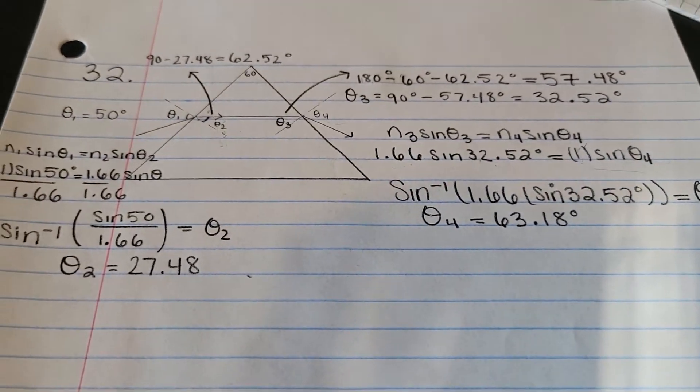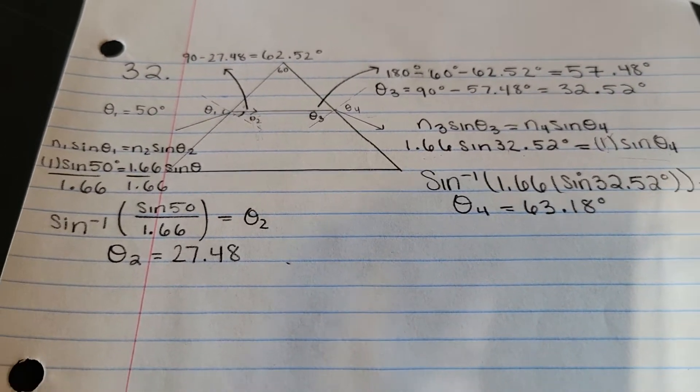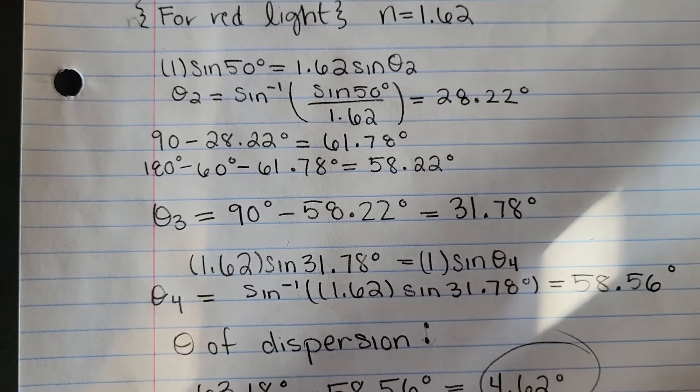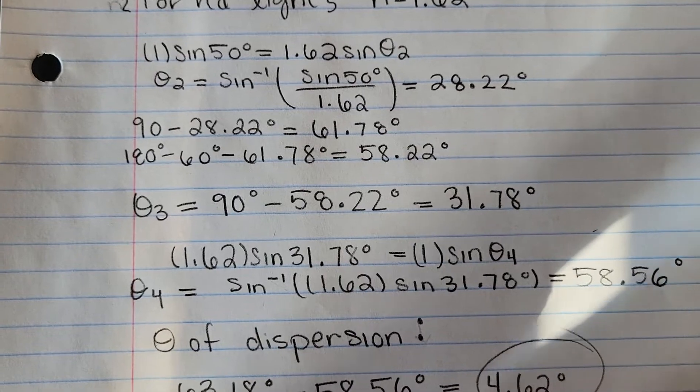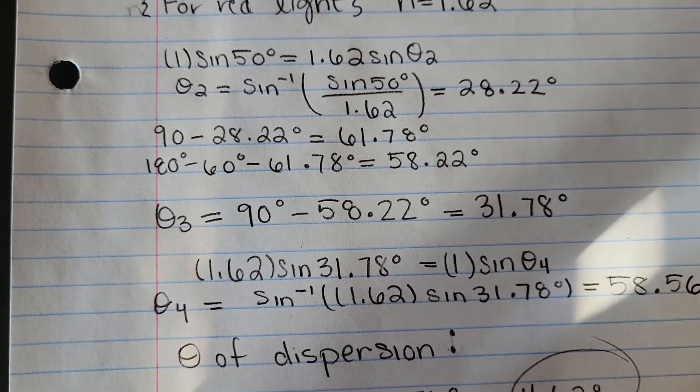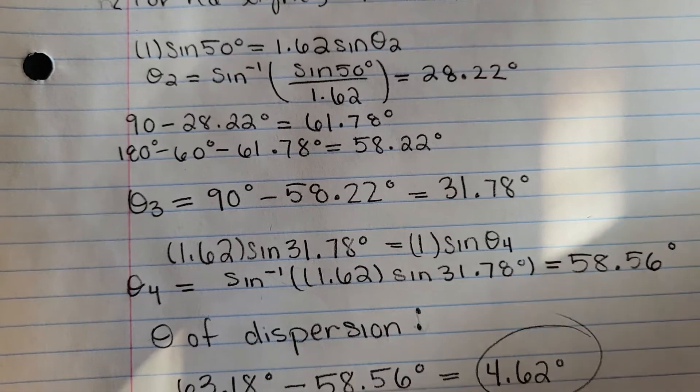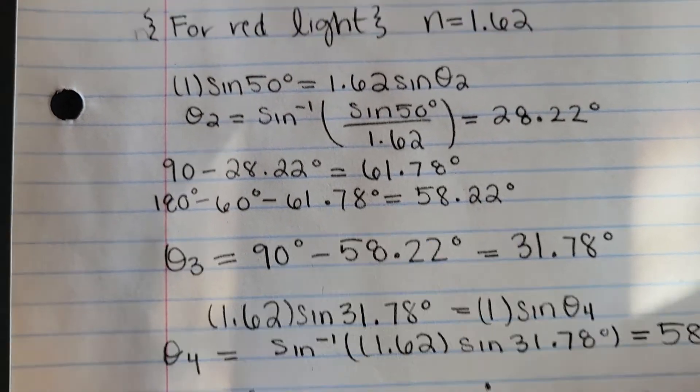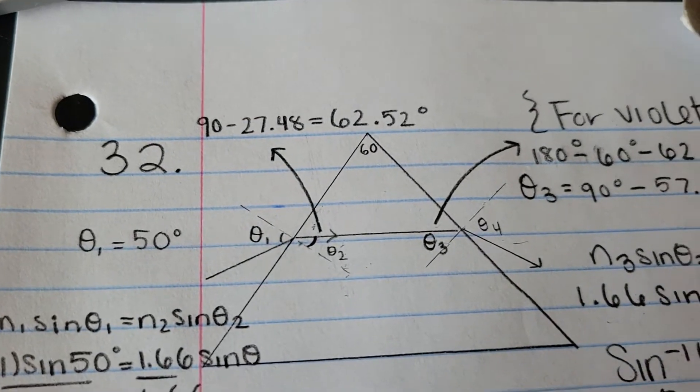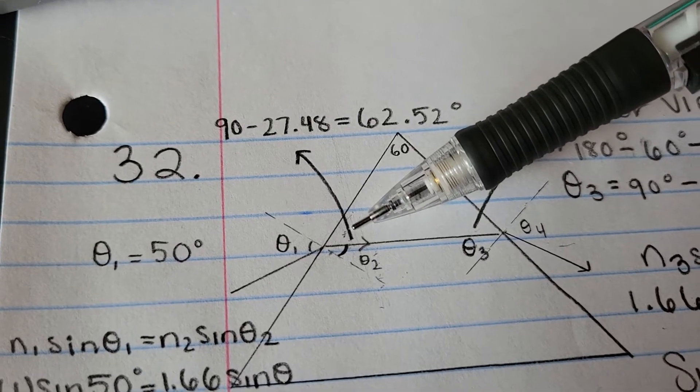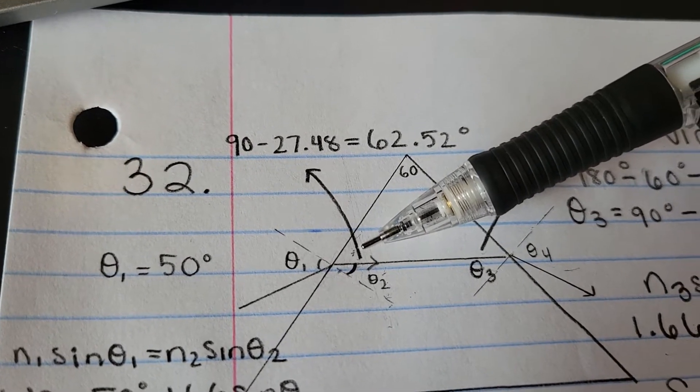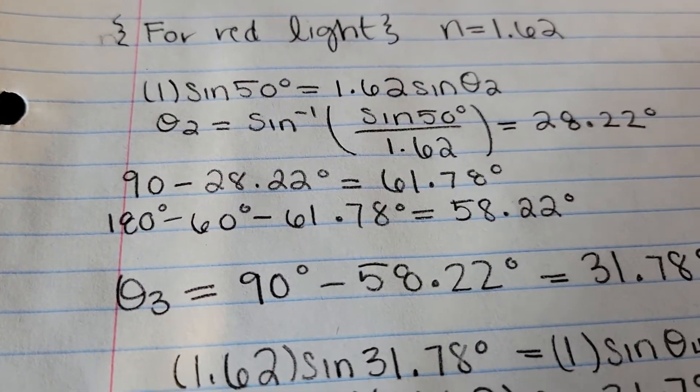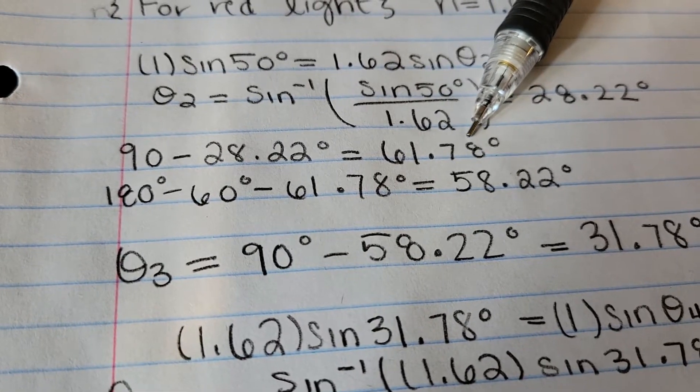Now what we have to do is do this all over again for red light. I'll do this and then show you what I did. Okay, so for red light, I repeated the same process. For theta 2, I got 28.22 degrees. And then to find the other side that forms that triangle where we're trying to find this angle, I just subtracted 90 by 28.22 degrees and got 61.78.